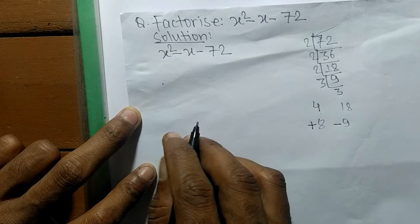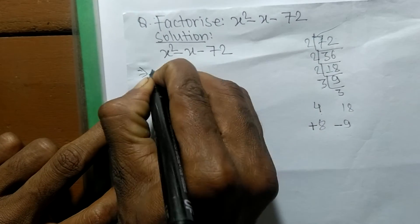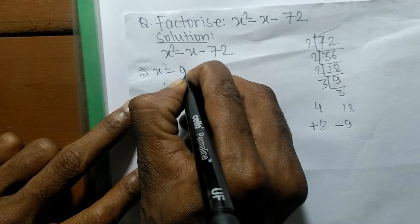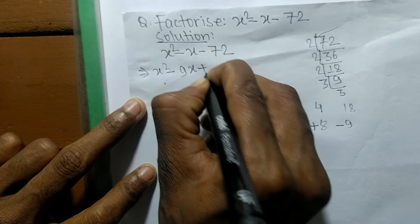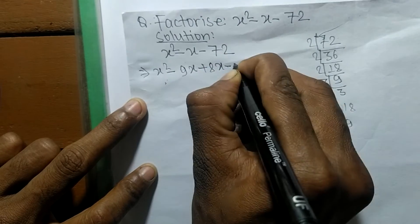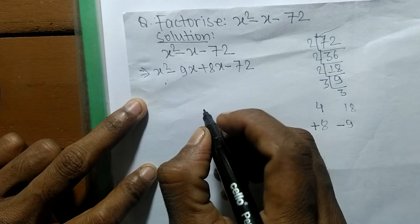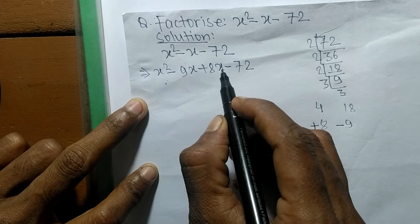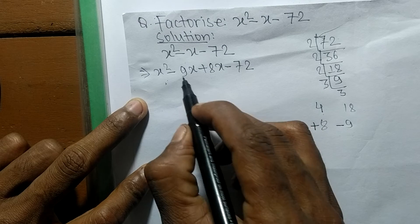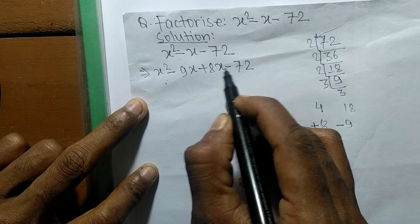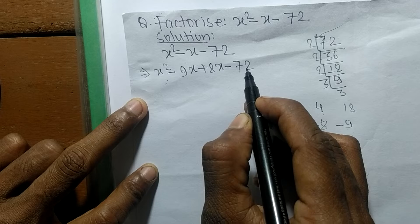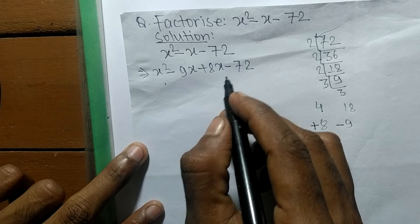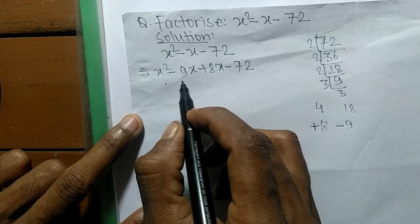So we can rewrite the expression as x squared minus 9x plus 8x minus 72. Here, minus 9 plus 8 equals minus 1, and minus 9 times 8 equals minus 72, which confirms our split is correct.